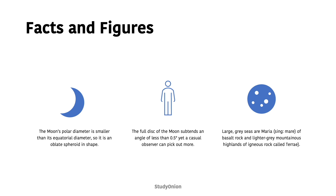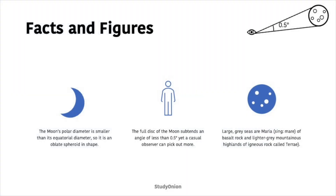The large seas on the moon are known as Maria and are sometimes just referred to as seas. The singular of Maria is Mare. These Maria are made of basalt rock. And the lighter grey, almost mountainous highlands of igneous rock are known as terrae, and these highlands are made of igneous rock called anorthosite.